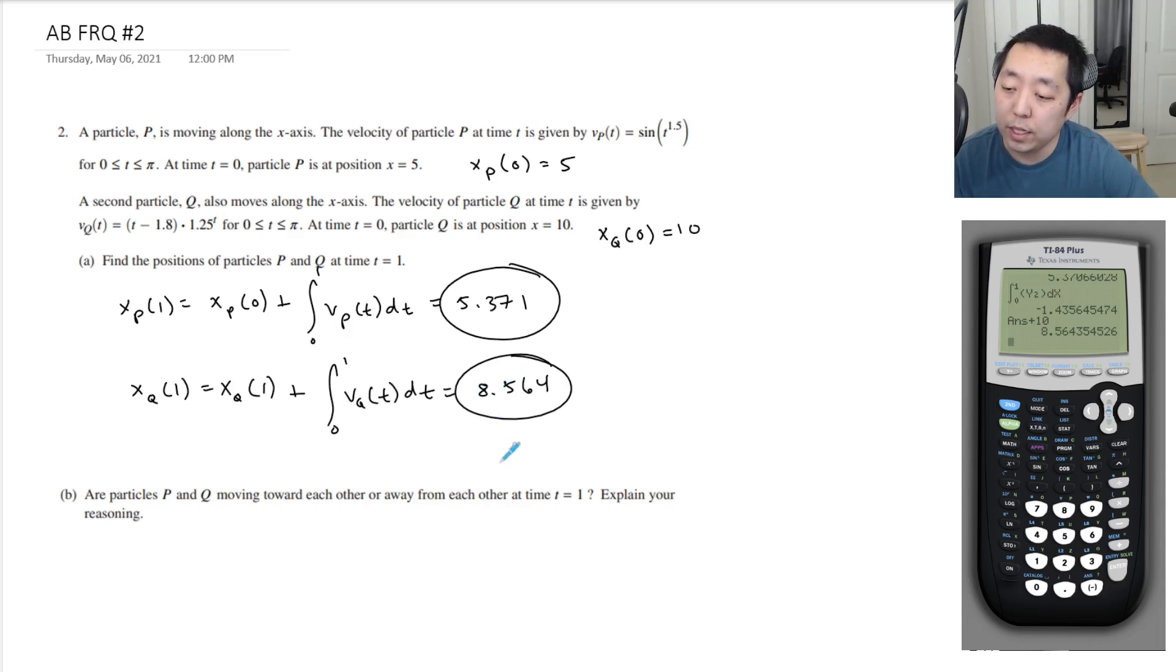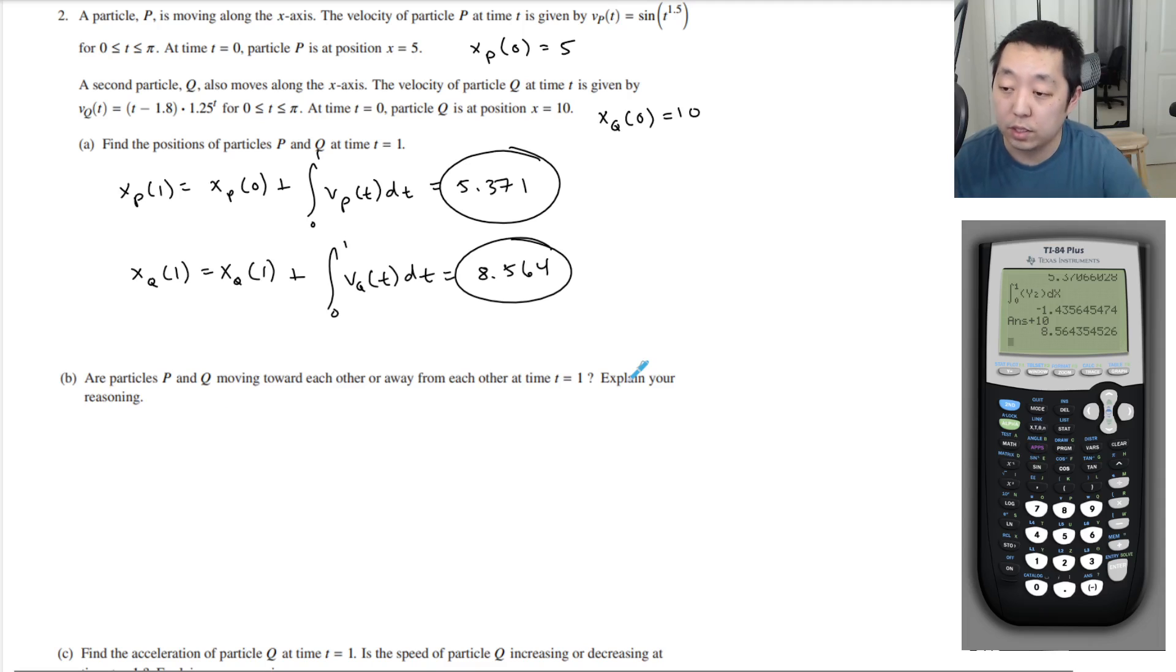Are particles P and Q moving toward each other or away from each other at time t equals 1? Explain your reasoning. We'd have to look at their velocities. So we want to find vP(1) and vQ(1). Now at this time, basically Q is to the right and P is to the left on the number line. He's at 8 and he's at 5. So we have to look at the direction that they're going.